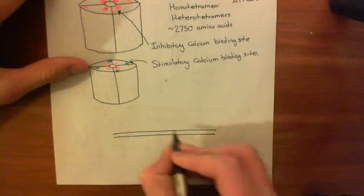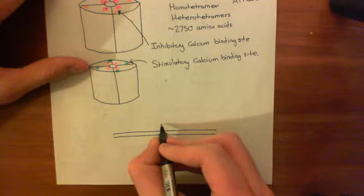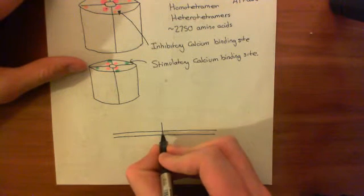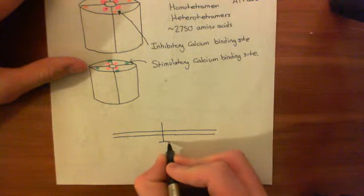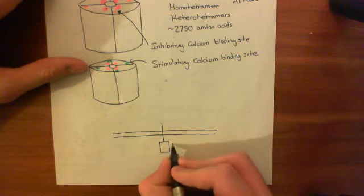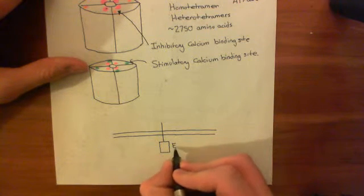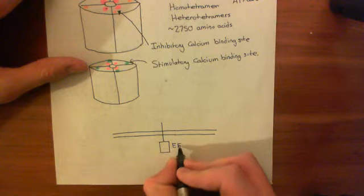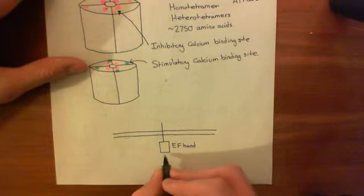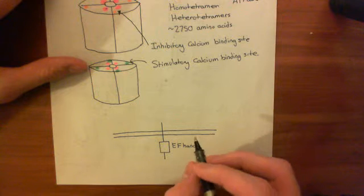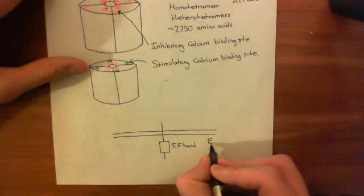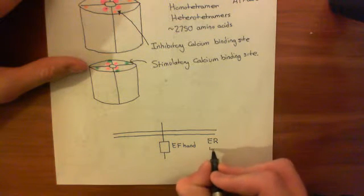Let me draw it out before I annotate its name. It has a single membrane-spanning domain, a membrane-spanning topology like so. On the ER lumenal side, it has an EF hand domain — a calcium-sensing domain. So this EF hand is on the ER lumen side.